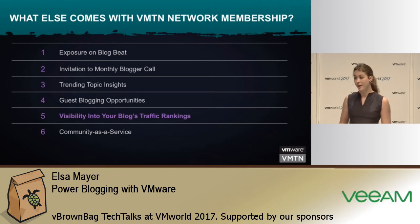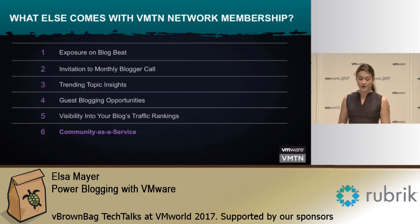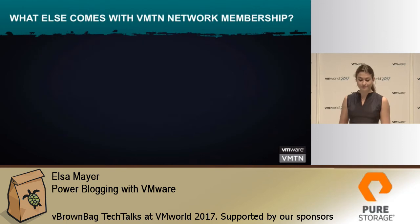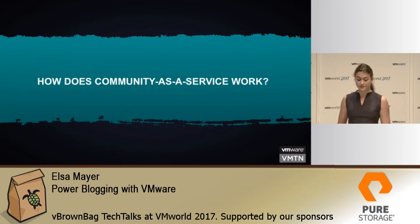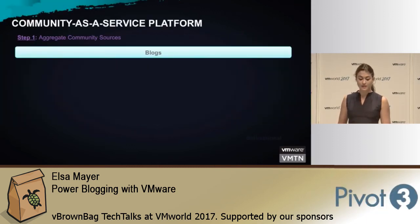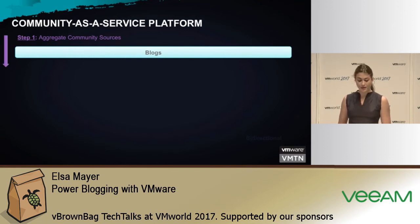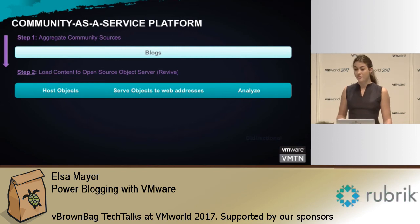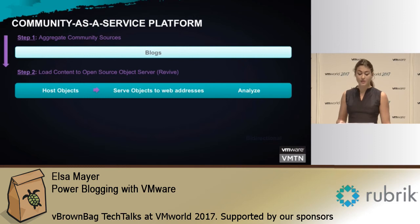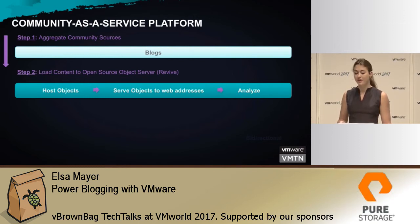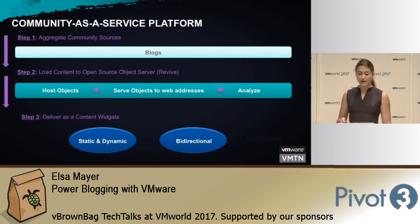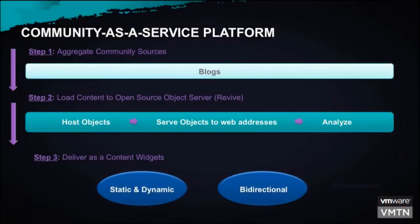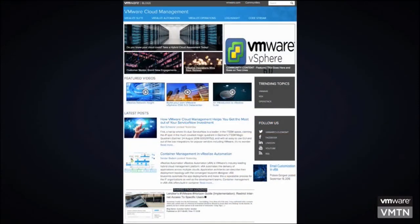If you opt in to tag your page with our analytics tool, we can give you insights into your traffic rankings from various internal VMware.com pages. Finally, we're offering a Community as a Service program. Community as a Service essentially aggregates all the community sources in the ecosystem — right now mainly focusing on blogs and podcasts — and loads them onto an open source ad server called Revive. This object server can host and serve these objects to web addresses and provide us with analytics.